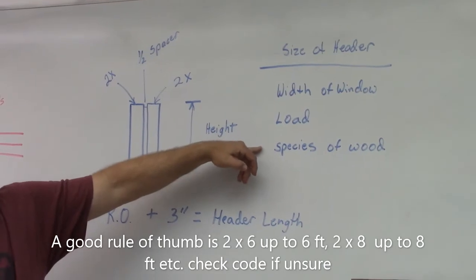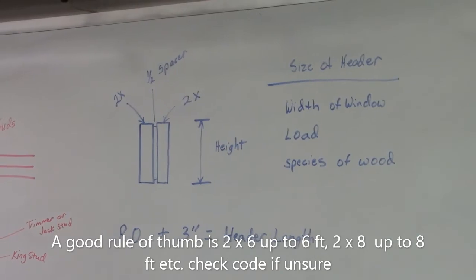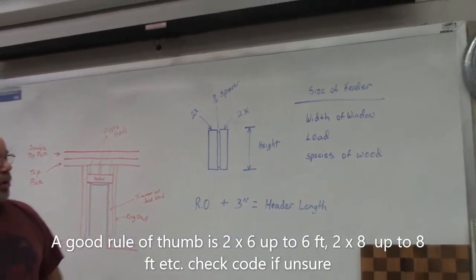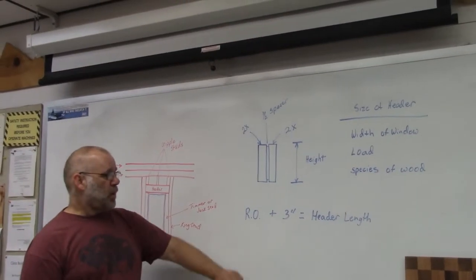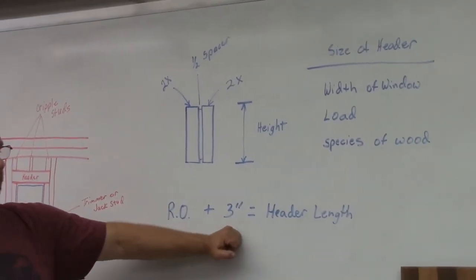are not created equal. You have to know what species of wood you're going to use for your header. Now, to determine the length of your header, all you have to do is take the rough opening width, add 3 inches, and that will give you the length of your header.